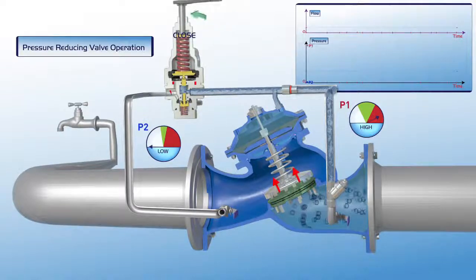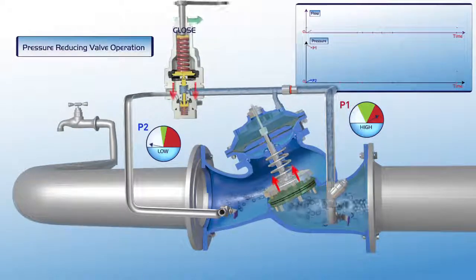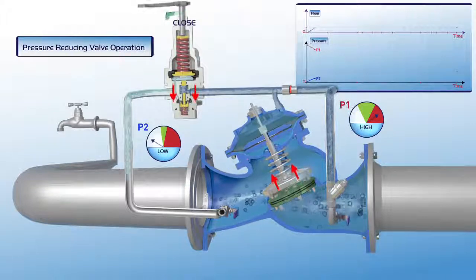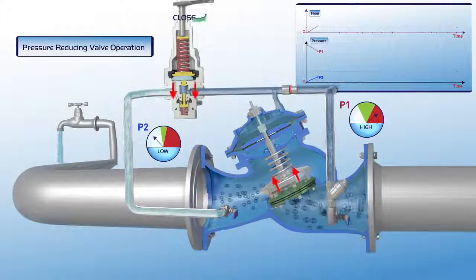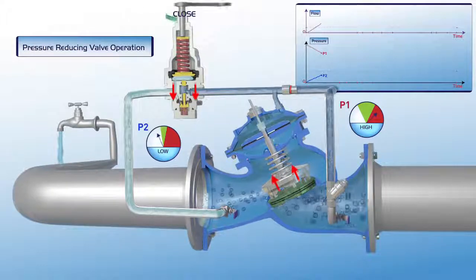The user gradually turns the pilot adjusting bolt clockwise. The pilot plunger is pushed downwards, causing a pressure drop in the valve's upper control chamber. This results in the gradual opening of the valve and filling of the consumer line.